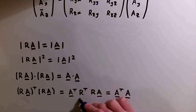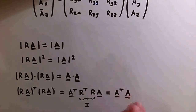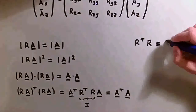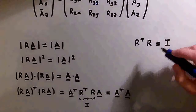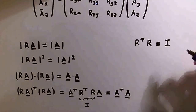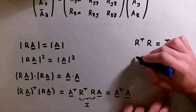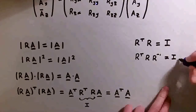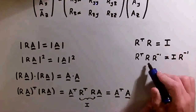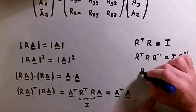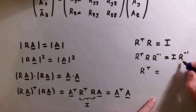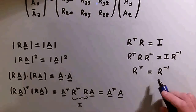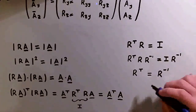Looking at the left and right hand sides of this equation, the only way it is satisfied is if the product of the transpose of R and R is the identity matrix — so R^T times R equals I. Multiplying both sides by the inverse of R, we get R^T times R times R⁻¹ equals I times R⁻¹. Since R times R⁻¹ is the identity, we're left with R^T equals R⁻¹.